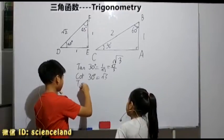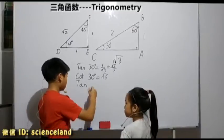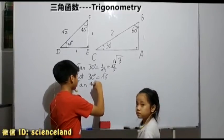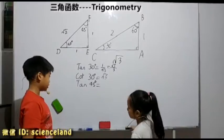Now we'll find out tangent of 45 degrees. Tangent is opposite over adjacent.